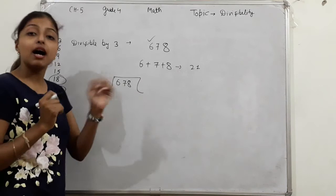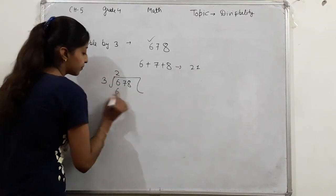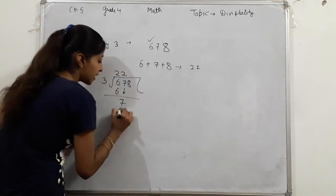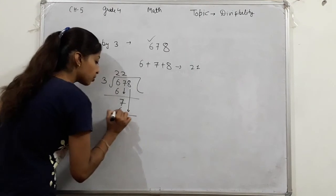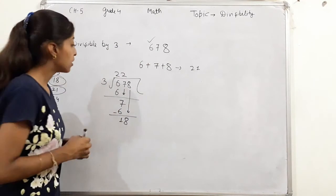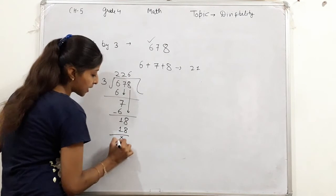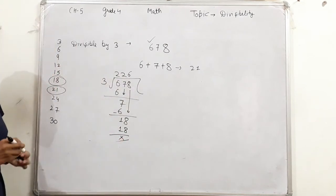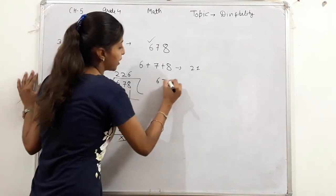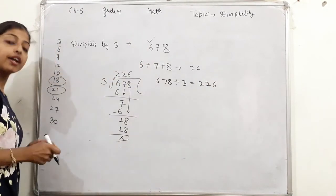Now let's check 678. 3 twos are 6, bring down 7, 3 twos are 6, 1 minus gives us, bring down 8. So we checked 18. 18 divides - 3 sixes are 18, minus and cut. This number completely divided by 3. So if we divide 678 by 3, answer will be 226.